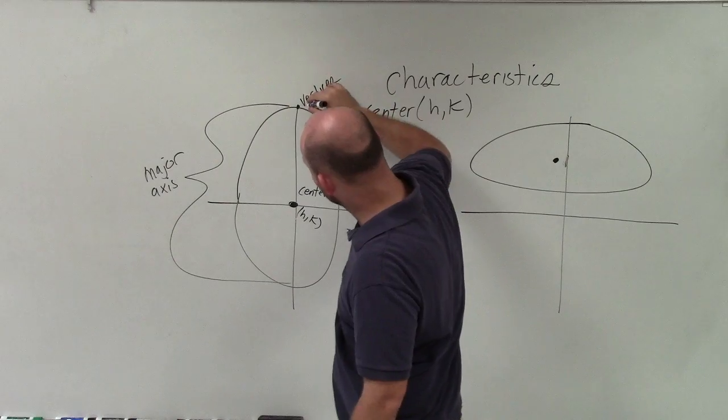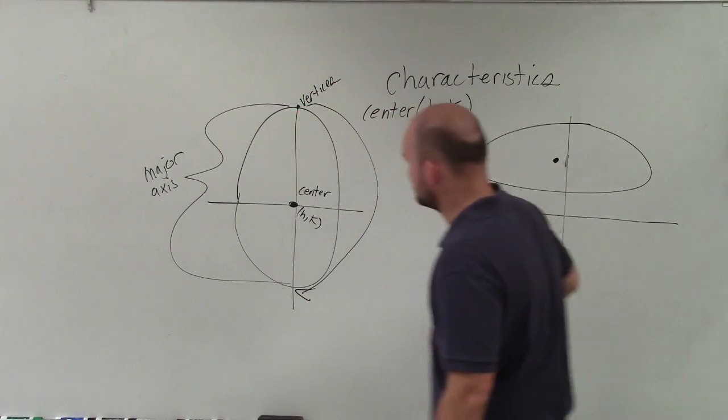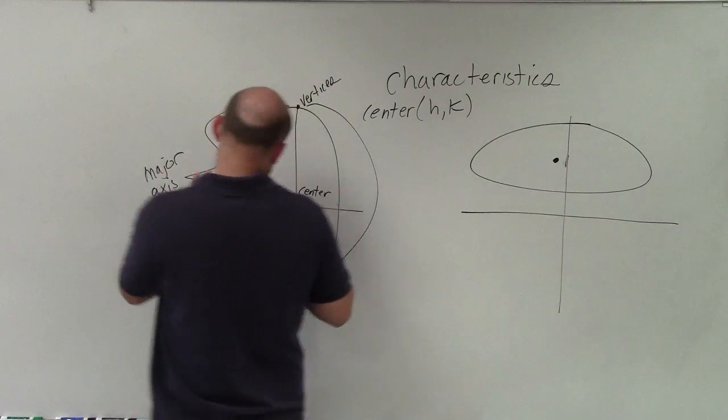And what's at the tip of your major axis is going to be your two vertices. Vertices are one vertex, and there's my other vertices.